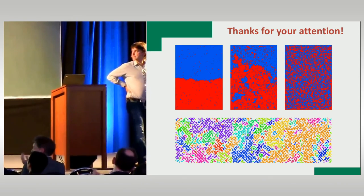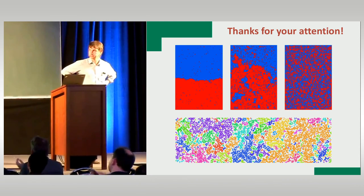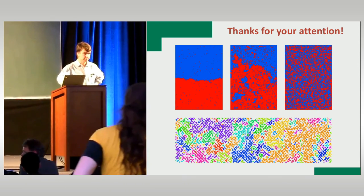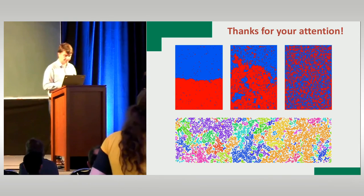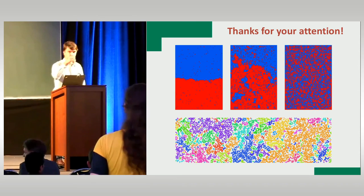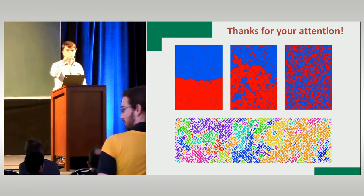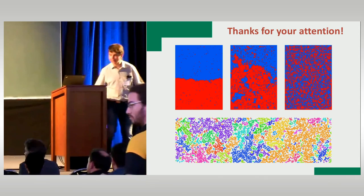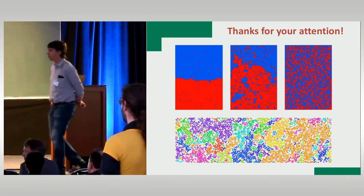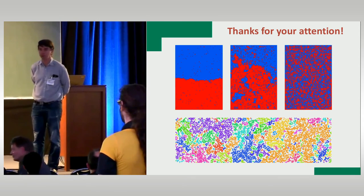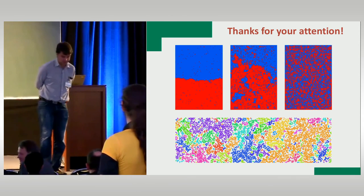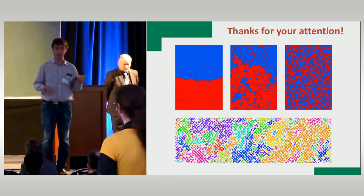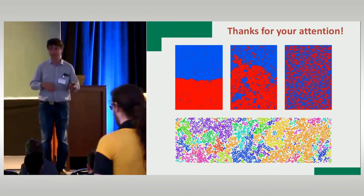Thank you for your attention. The question concerned how the simulation pictures at the top were made — they use so-called Glauber dynamics, which is fairly slow but is actually what happens in nature more or less. The spins don't flip all at a time — you can think of them flipping one by one.